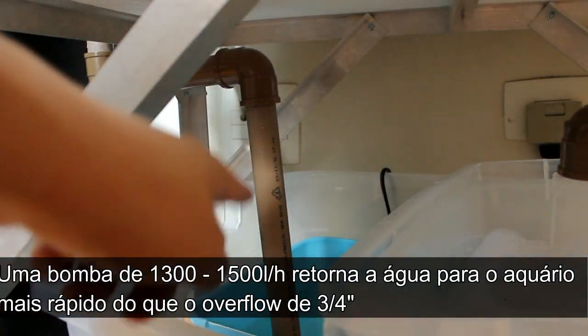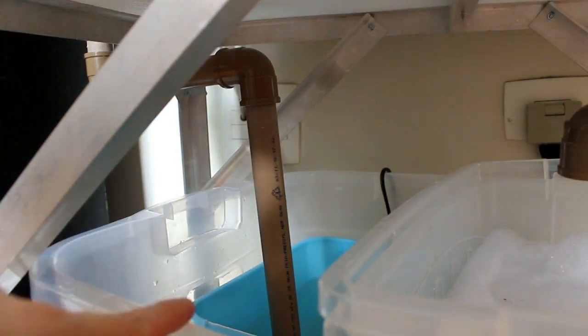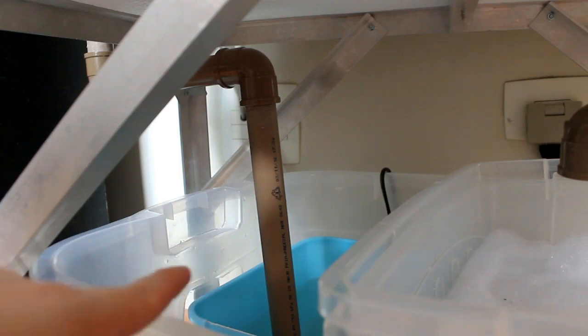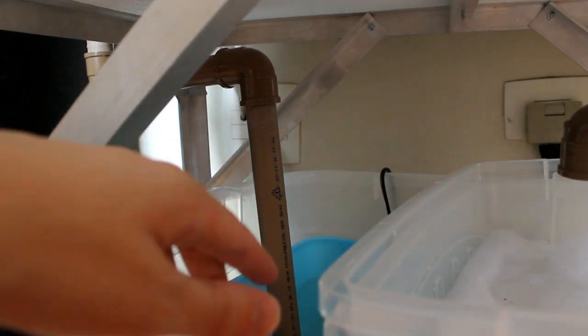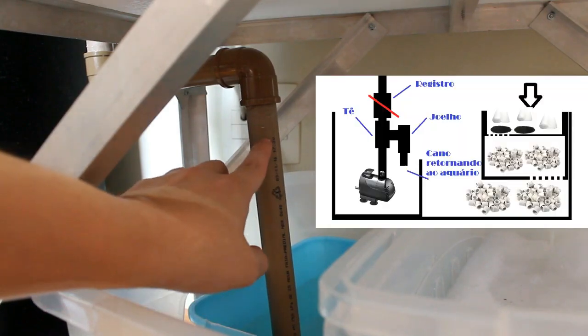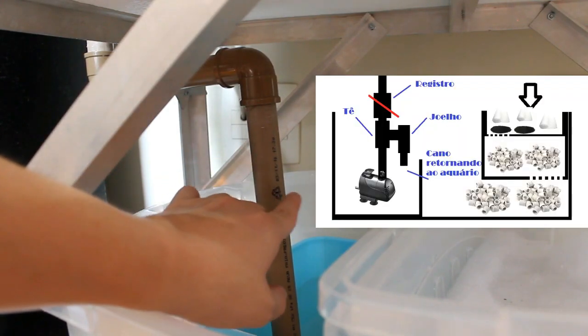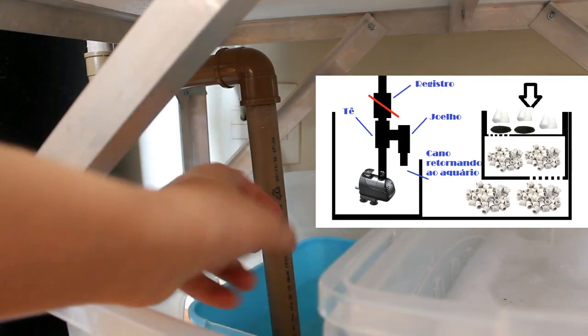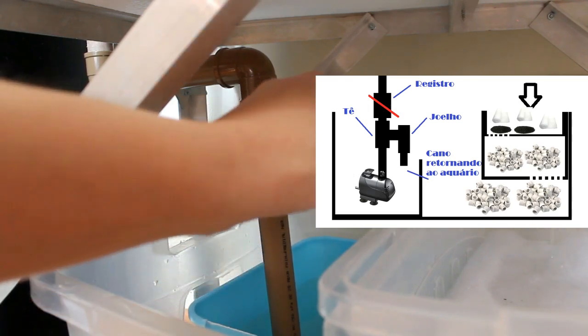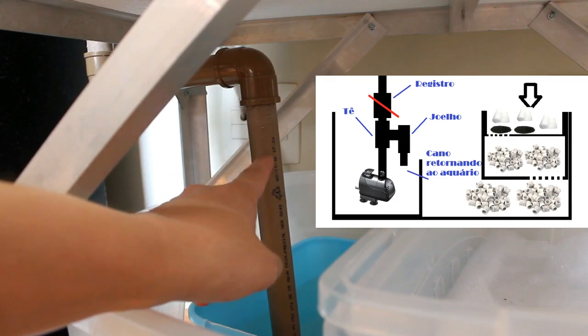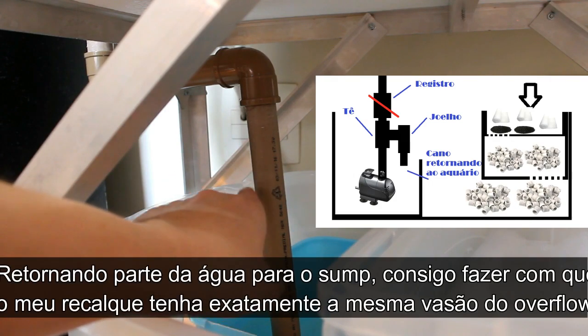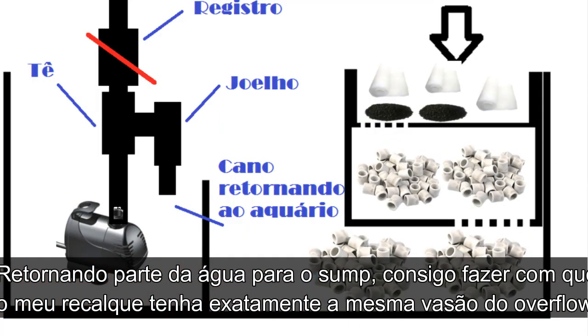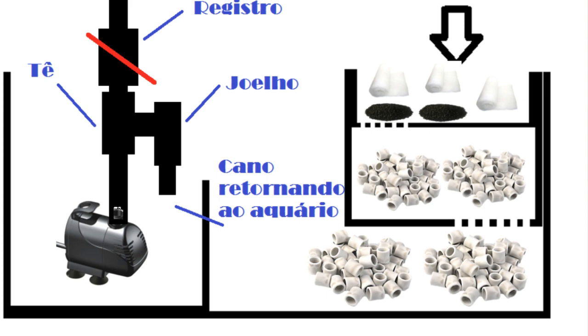Então, o que eu vou ter que fazer nesse caso que eu escolhi errado? Ou que eu queira realmente tirar um pouco da vazão da bomba para colocar num reator ou alguma coisa do gênero? Vocês podem ver, esse cano é da bomba de recalque. Ela vai por aqui, vira e sobe para o aquário. Como é que eu diminuo a vazão da bomba para que a bomba seja mais fraca do que a vazão máxima do overflow? Eu vou precisar colocar mais um registro aqui, vou precisar colocar um tê aqui embaixo, um pedacinho de cano, um joelho e outro pedaço de cano para voltar.